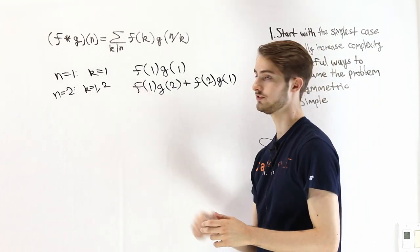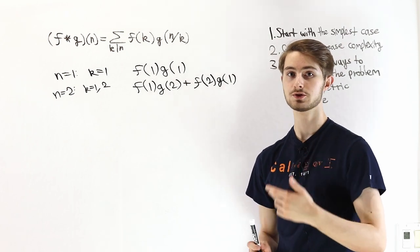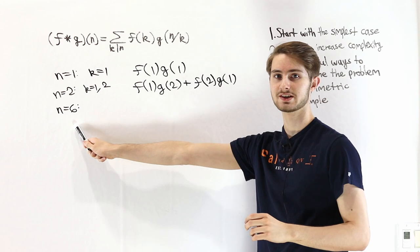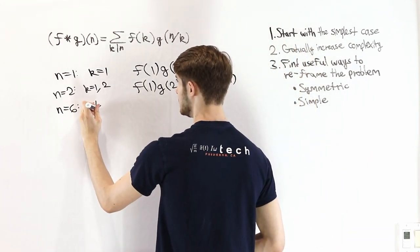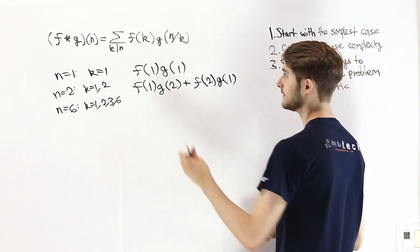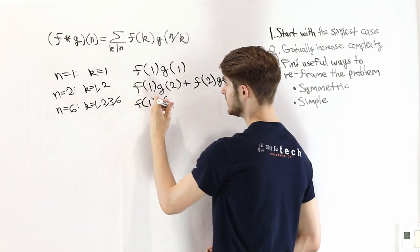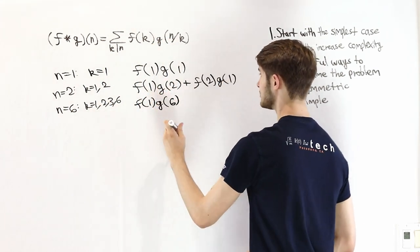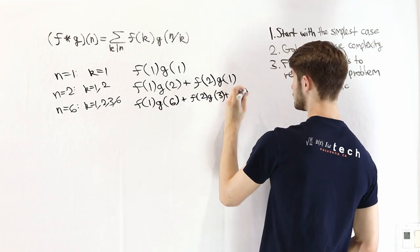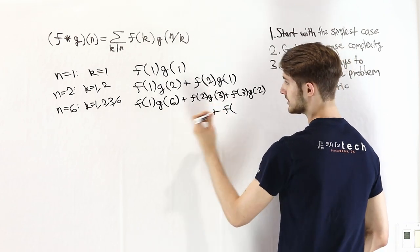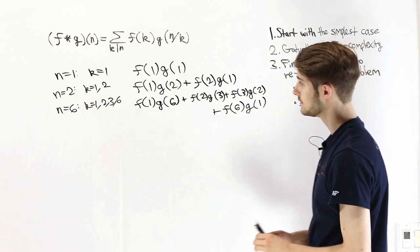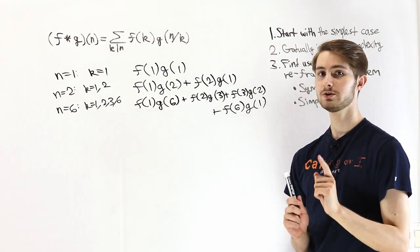So far we've only looked at numbers with 1 or 2 factors. The next step is to look at a number with multiple factors, for example n equals 6. The factors of 6 are 1, 2, 3, and 6. Plugging these into our sum we get: f of 1 times g of 6, plus f of 2 times g of 3, plus f of 3 times g of 2, plus f of 6 times g of 1.